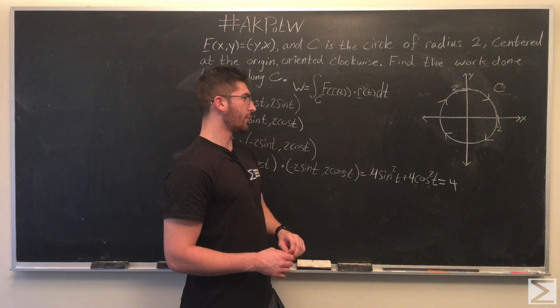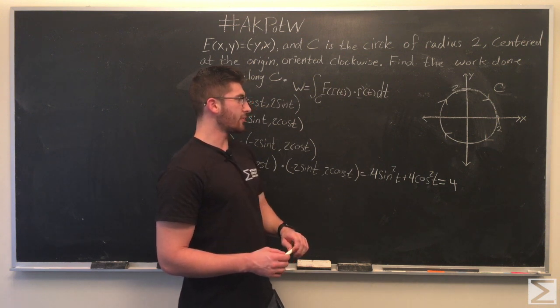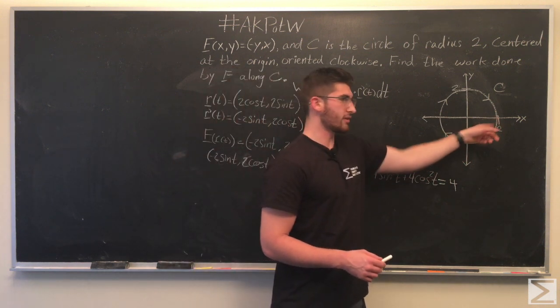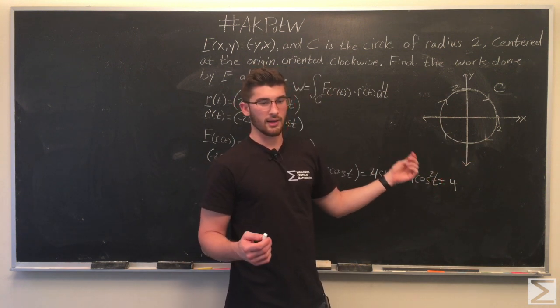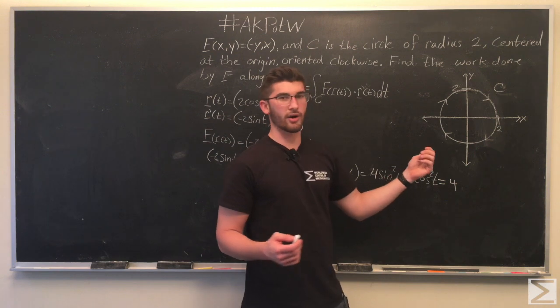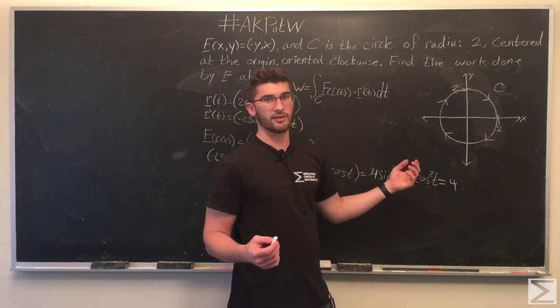So, we know that C is a circle, so it's obvious that you can pick any limits that describe a complete circle. I think the most obvious are 0 and 2π.